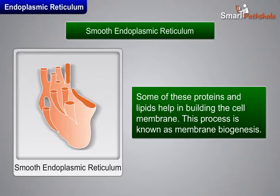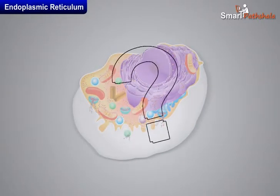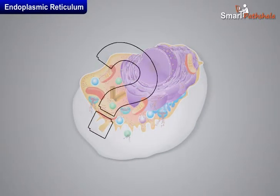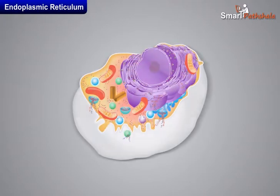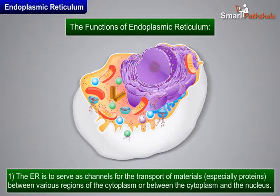Some of these proteins and lipids help in building the cell membrane. This process is known as membrane biogenesis. The functions of the endoplasmic reticulum include serving as channels for the transport of materials, especially proteins, between various regions of the cytoplasm or between the cytoplasm and the nucleus.